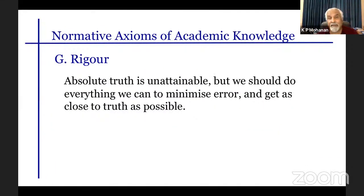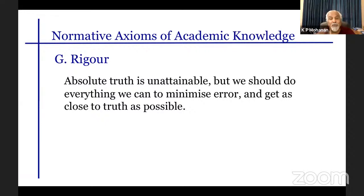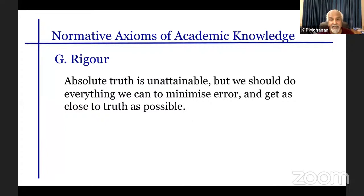Academic knowledge must be rigorous. Absolute knowledge or absolute truth is unattainable because human knowledge is always uncertain and fallible. However, we must try our best to get in that direction. Do whatever we can to increase the probability of getting closer to truth and to reduce the possibility of error. That's what rigor means. All these are commitments we accept when functioning in academic knowledge, but not necessarily in other traditions of knowledge.